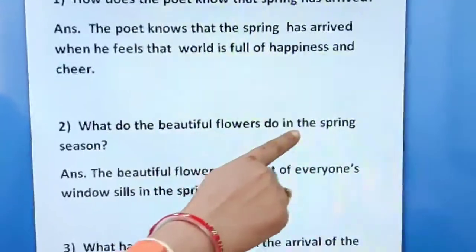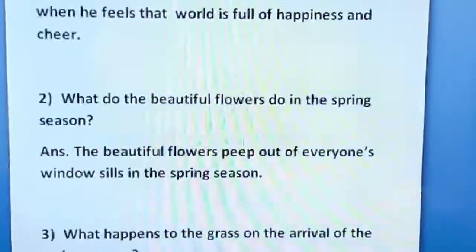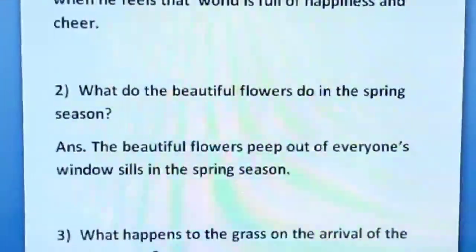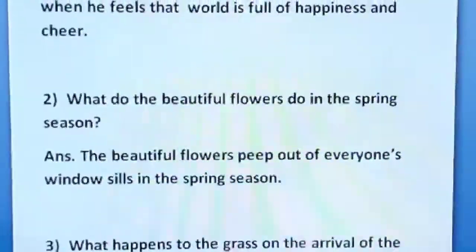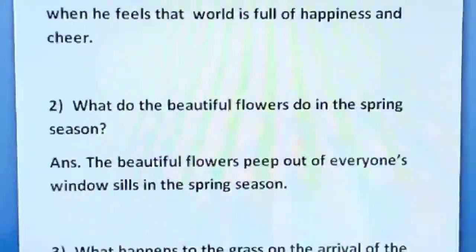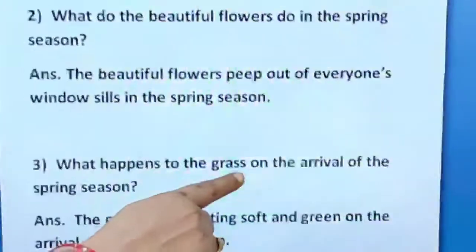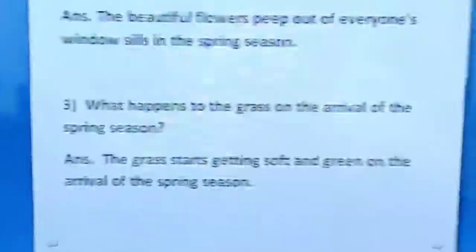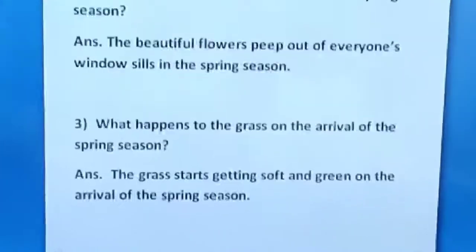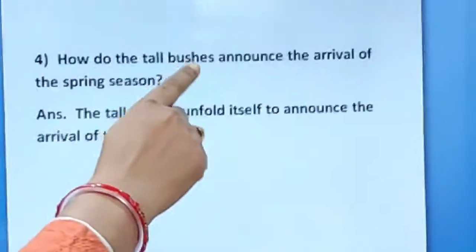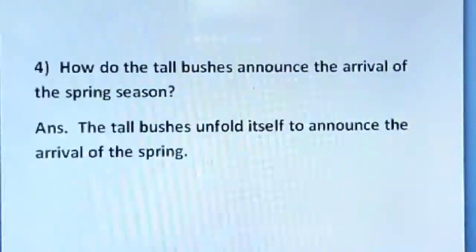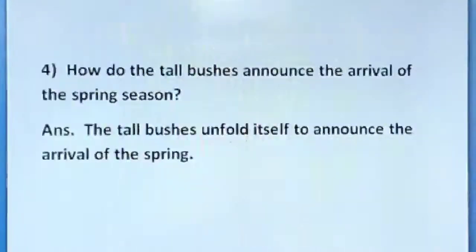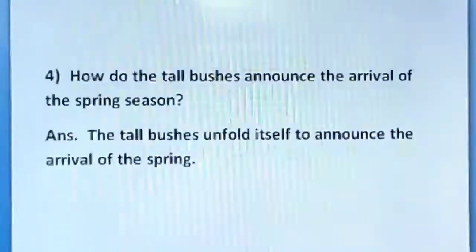What do the beautiful flowers do in the spring season? The beautiful flowers peep out of everyone's window sills in the spring season. What happens to the grass on the arrival of spring? The grass gets very soft and green. How do the tall bushes announce the arrival of spring? They unfold themselves, they grow up, they bloom and announce that spring has arrived.